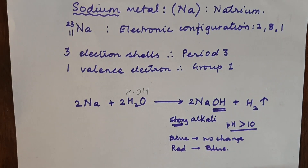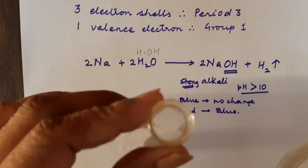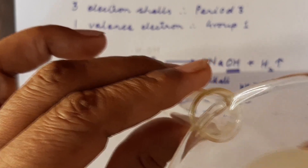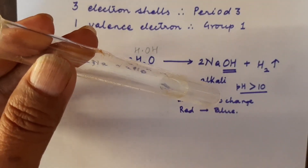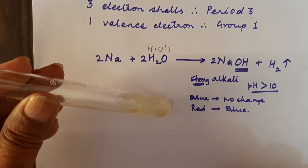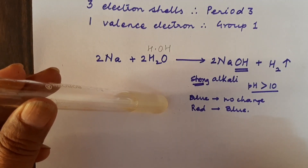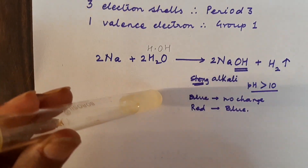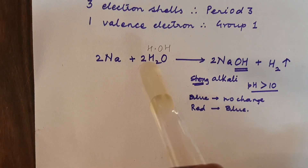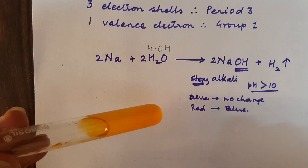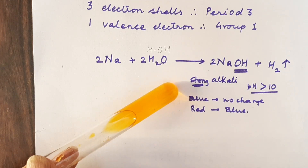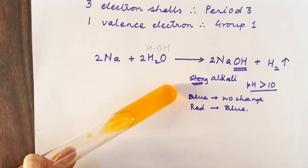We will also test with methyl orange and phenolphthalein. I am going to pour this solution into a small test tube so we can test it with methyl orange. Adding a drop of methyl orange — you can see that orange turns yellow, and that confirms this is an alkali.